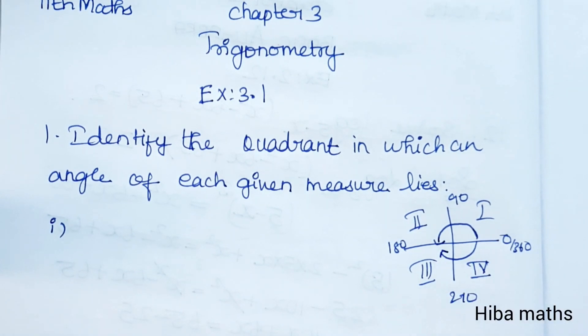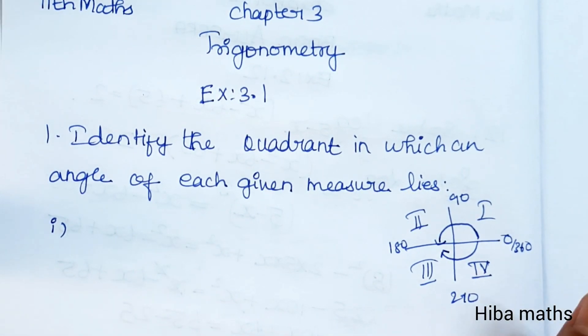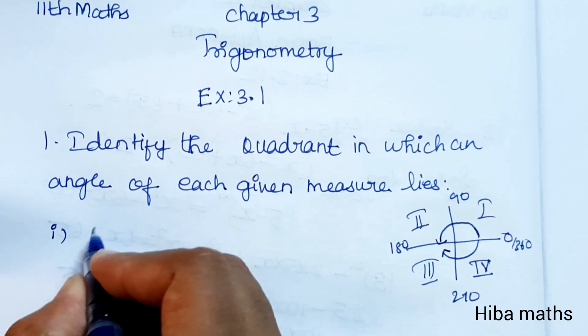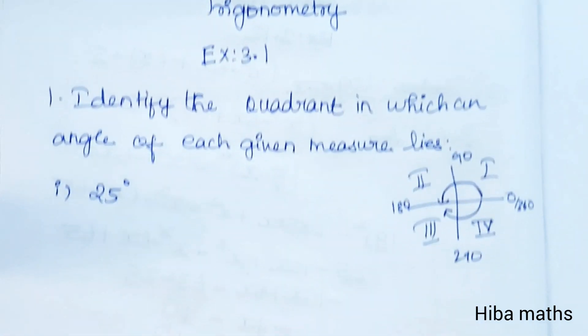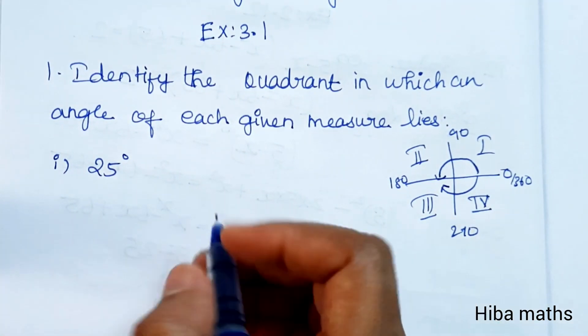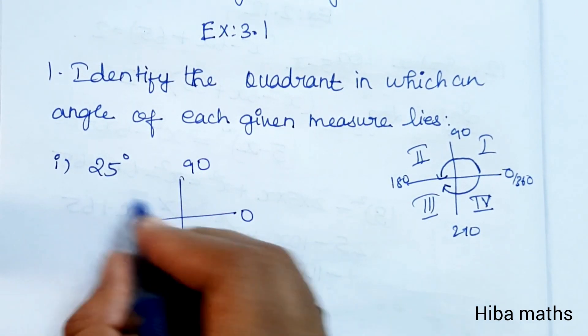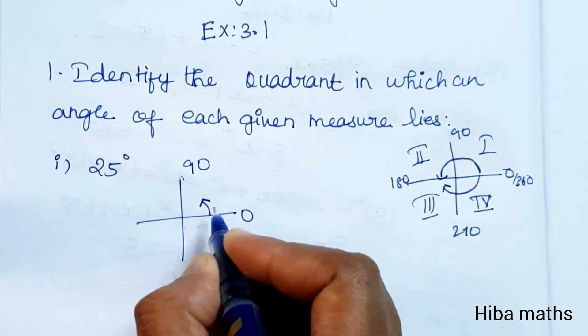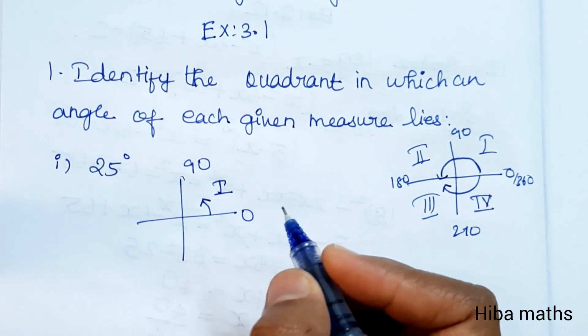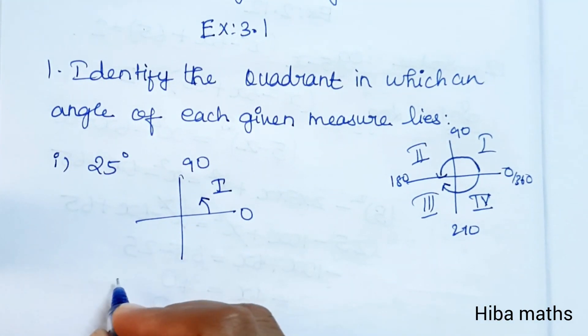This is the first angle, very easy. The first angle is 25 degrees. What quadrant is it in? Between 0° and 90°. Since 25° is less than 90°, it is in the first quadrant.